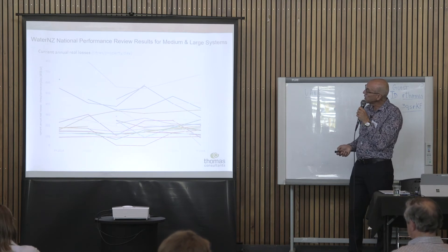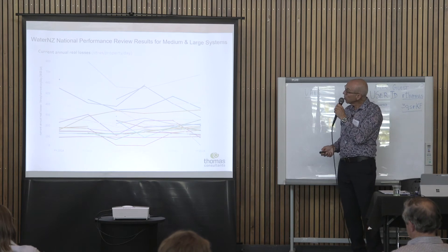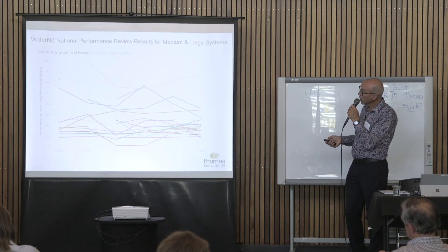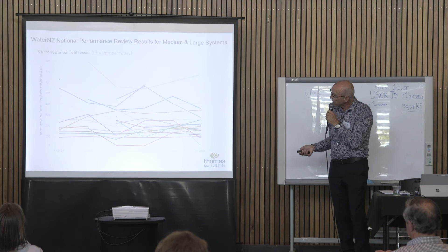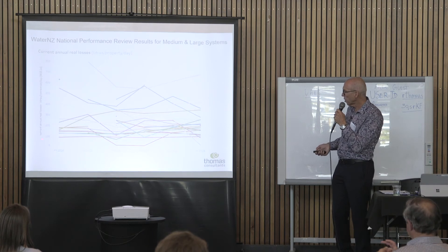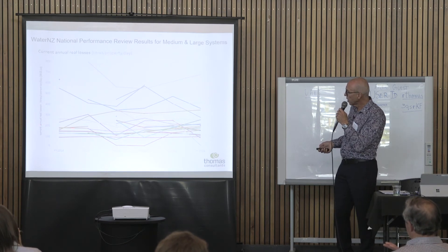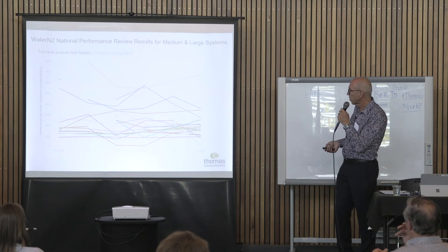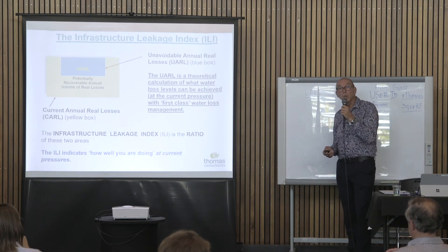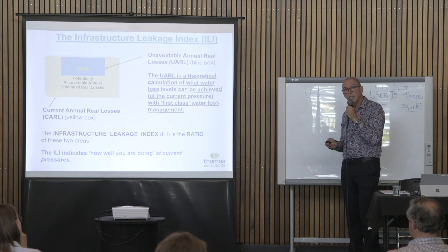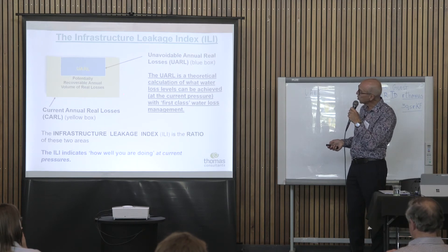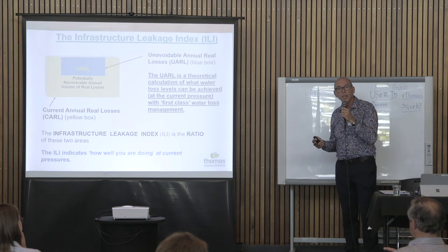Here's data from the Water New Zealand National Performance Review for medium and large systems — current annual real losses in litres per property or connection per day, which is the recommended indicator. Over the last five years, the bulk of systems are between 100 and 300 litres per connection per day. That's quite a lot of water when you think about it. The infrastructure leakage index is a ratio of what your losses currently are divided by what they could be with first-class water loss management.